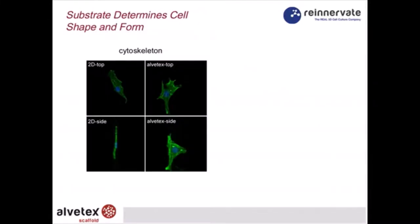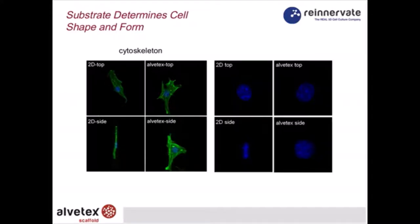Looking at a single fibroblast, we've stained it with phalloidin to stain the F-actin cytoskeleton and visualized using confocal microscopy. You'll see on the left, in the 2D situation, how a cell becomes very, very thin — you can see the nucleus with the DAPI staining. In a three-dimensional growth environment using Alvitex technology, the cell is three-dimensional all the way around. The nucleus also changes shape: it is flattened in 2D but spherical in Alvitex.